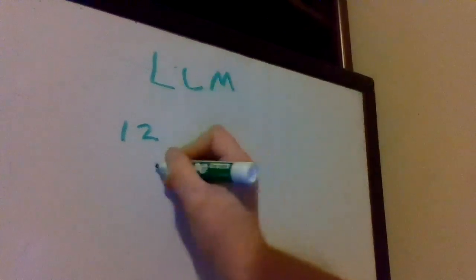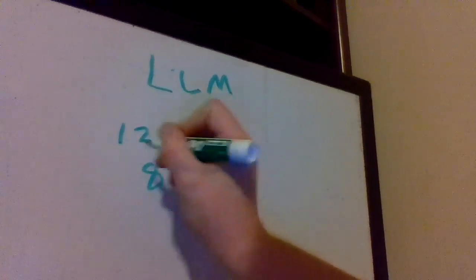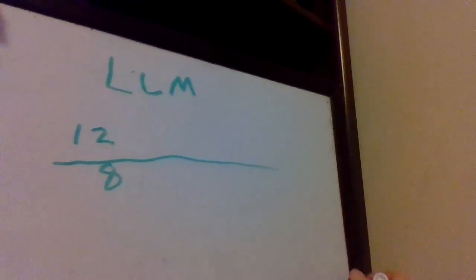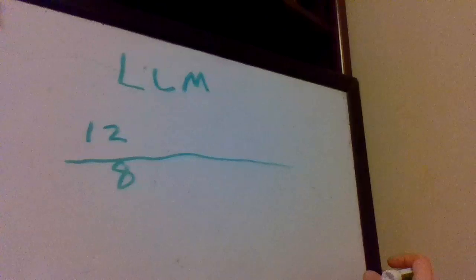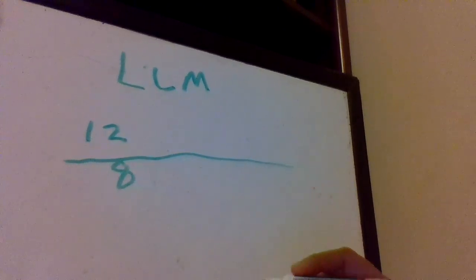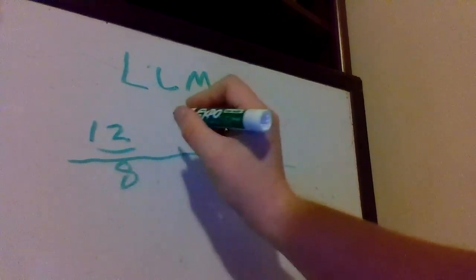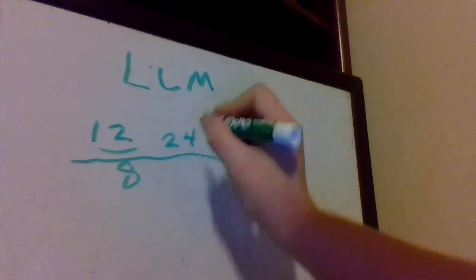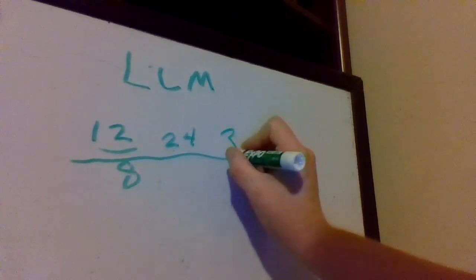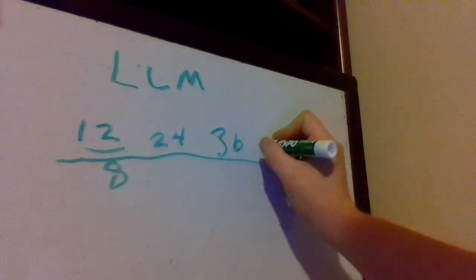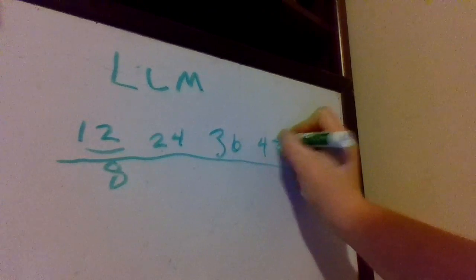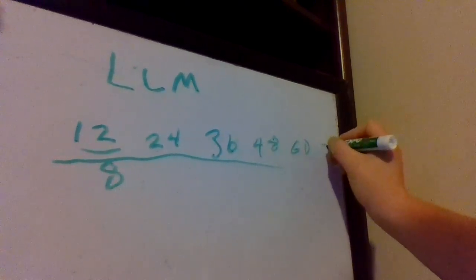So we make our little chart. We find all the multiples of twelve. Well, at least go six—sometimes there'll be more, but if you go six you'll be fine. So twelve times one is twelve, twelve times two is twenty-four, twelve times three is thirty-six, twelve times four is forty-eight, twelve times five is sixty, and twelve times six is seventy-two.